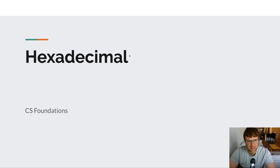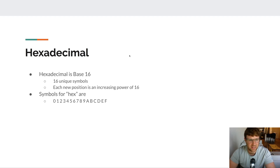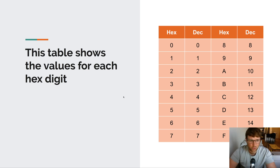Hexadecimal is base 16, which means there are 16 unique symbols. Each new position is just an increasing — or possibly decreasing — power of 16. The symbols for hex are 0 through 9, just like we'd expect, but since we're at a higher base than decimal we need some additional symbols, so we start using letters. After 9 we have A, B, C, D, E, and F — those are our 16 unique symbols in hex.